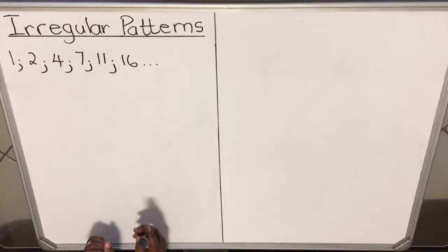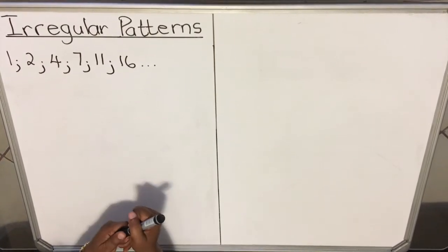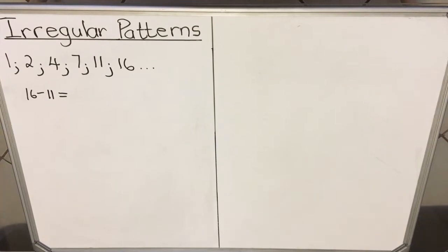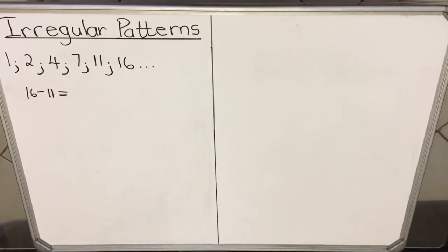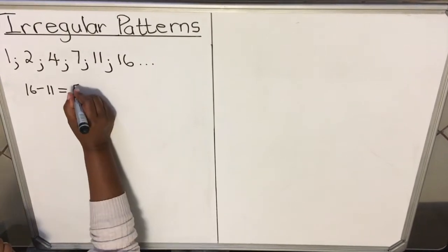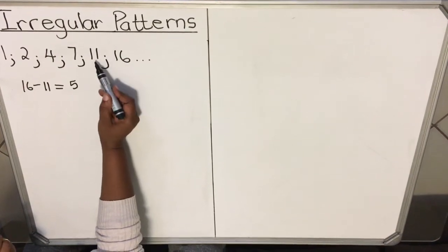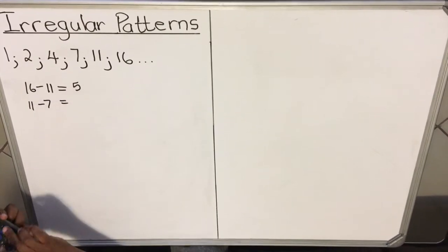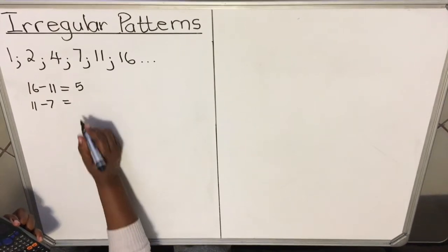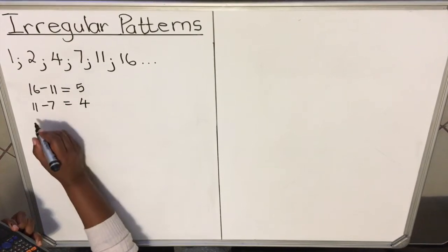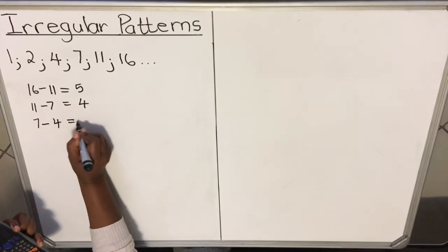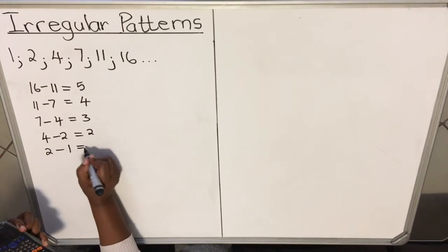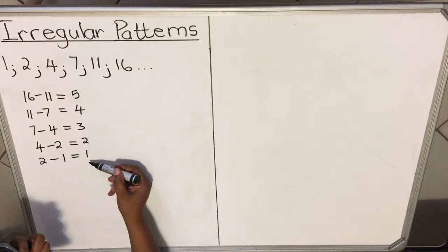This is the first example: 1, 2, 4, 7, 11, 16. When you look at this pattern and try to find the common difference, you take two consecutive terms and take the bigger one minus the smaller one. So I have 16 minus 11, that's 5. Then 11 minus 7 is 4. 7 minus 4 is 3. 4 minus 2 is 2, and 2 minus 1 is 1. So you see my difference here forms a pattern.